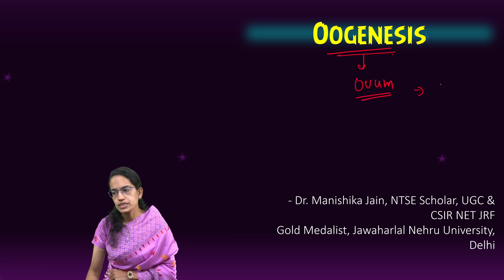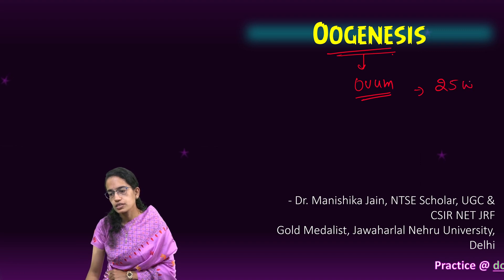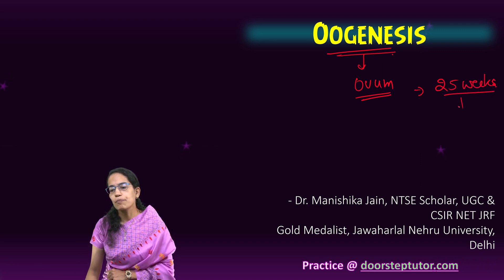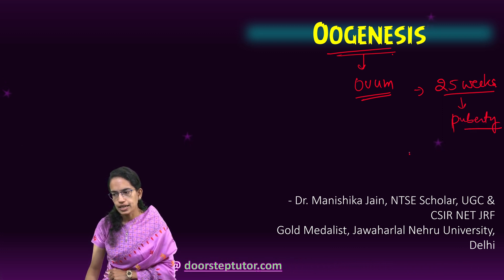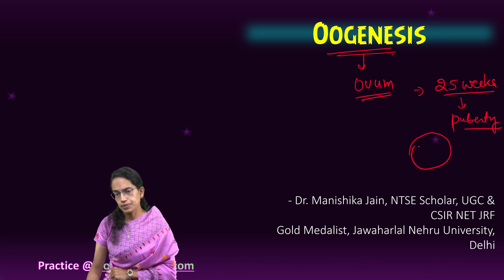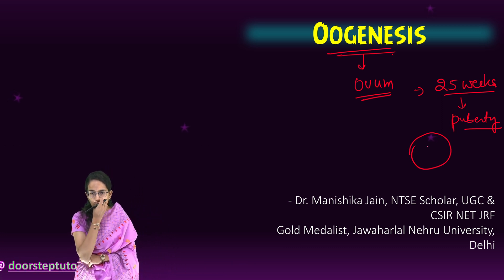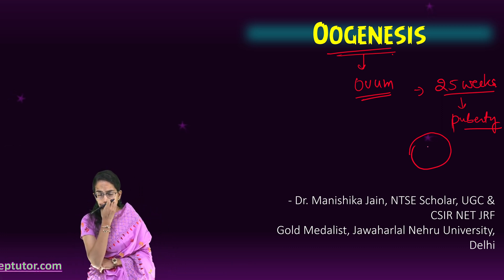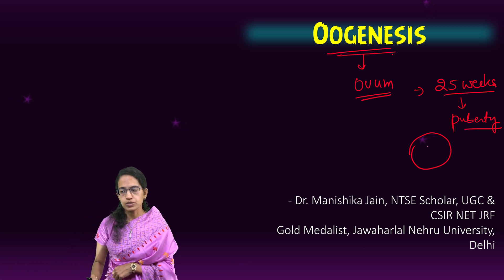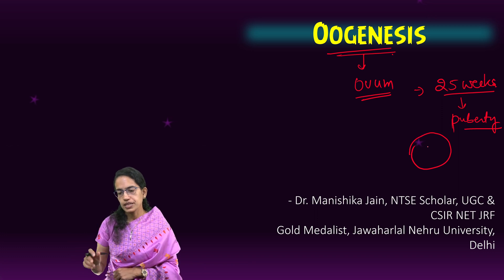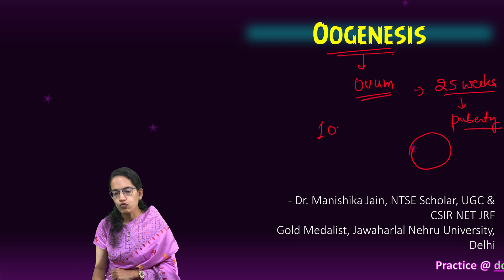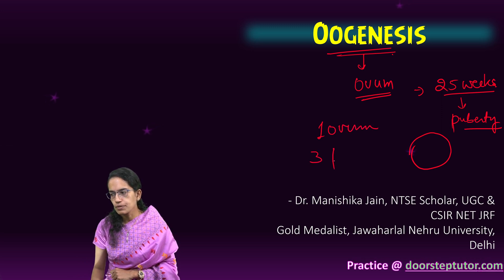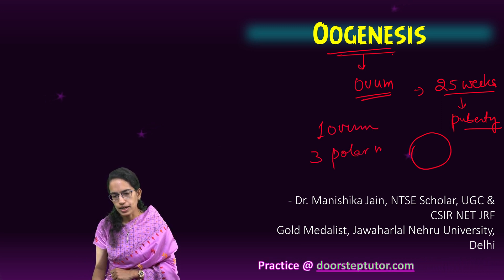The formation of ovum starts when the fetal ovary is 25 weeks old and is completed at puberty. It occurs in the germinal epithelium, similar to the formation of sperms as we have seen in spermatogenesis. It leads to formation of one ovum and three polar bodies every month.